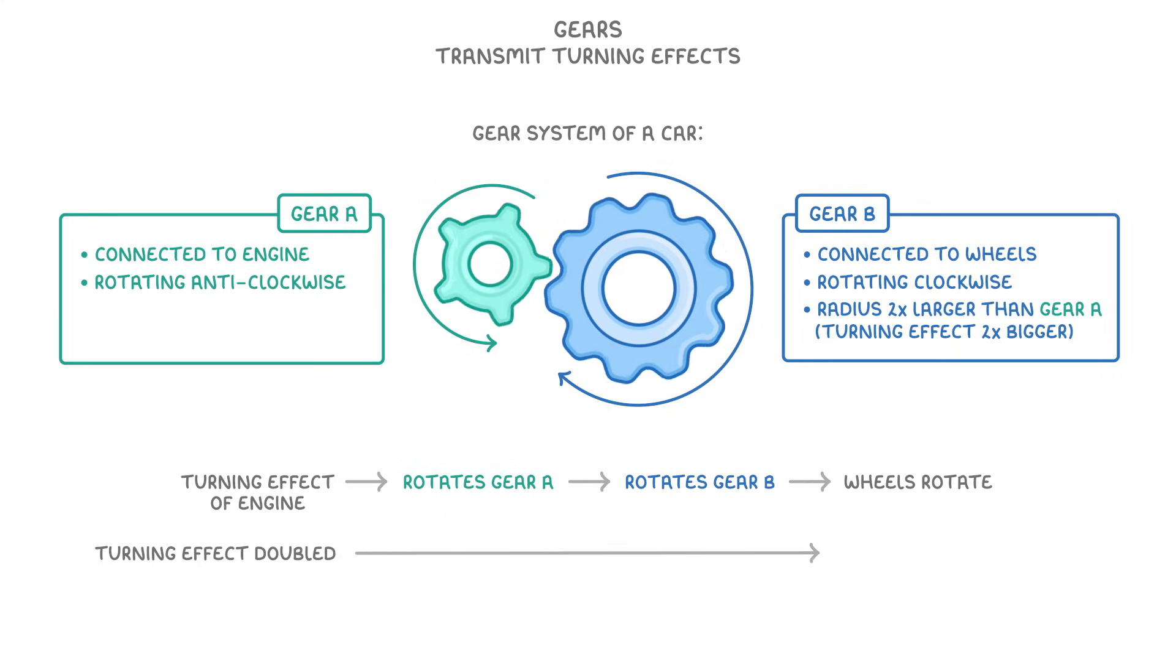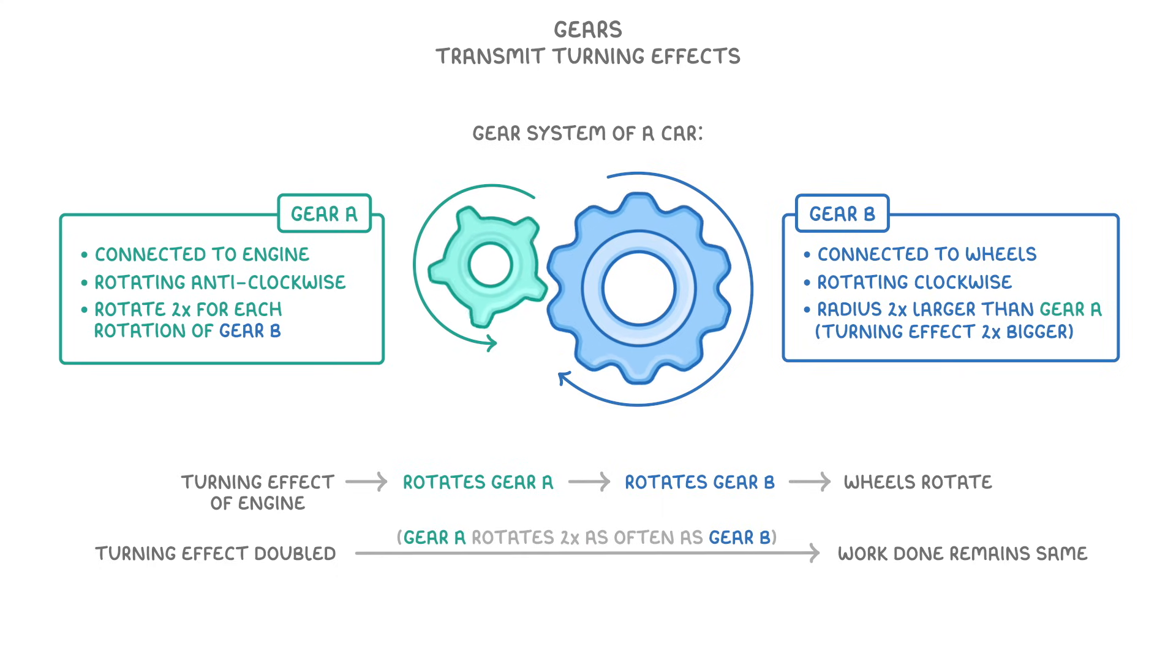Something else to notice is that gear A has to rotate two times for each rotation of gear B. So even though the turning effect is being magnified twofold, the total work done remains the same, because gear A is rotating two times as often as gear B.